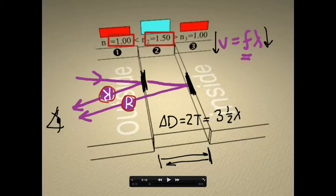Notice, because it is the gap, we are measuring our delta d here in between those two markers. Based on the thickness of the film, we need the wavelength in this region 2. This is the location that we care about the wavelength.